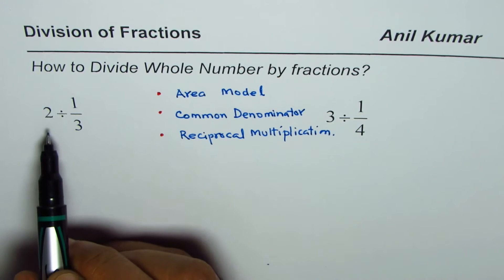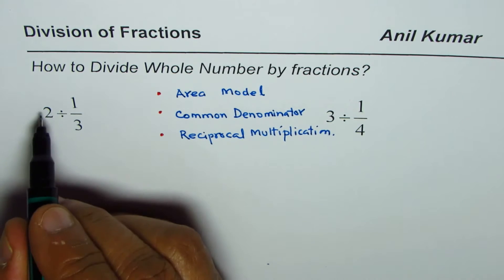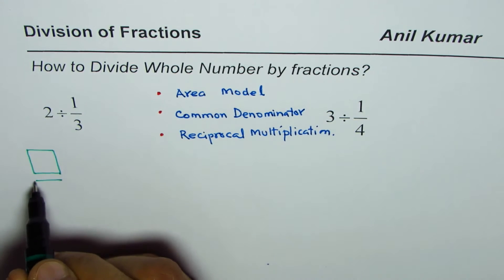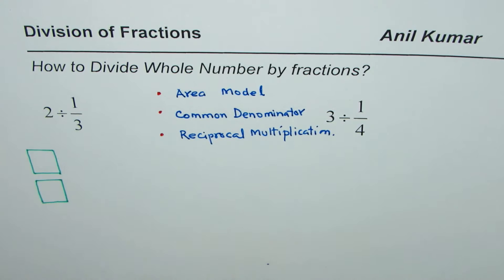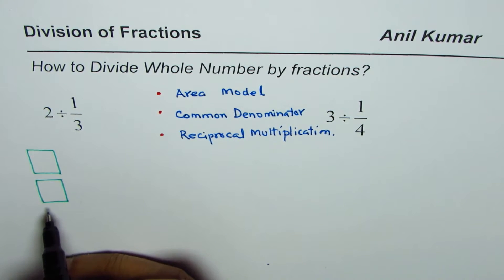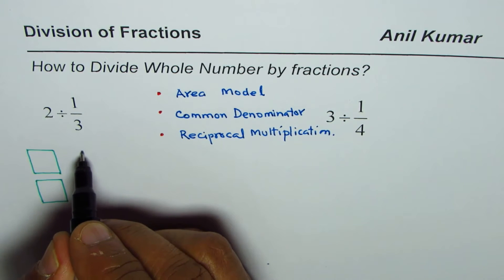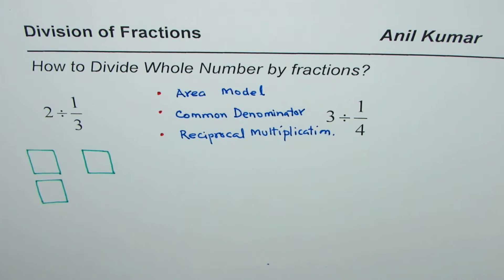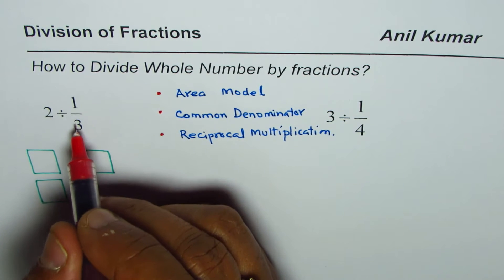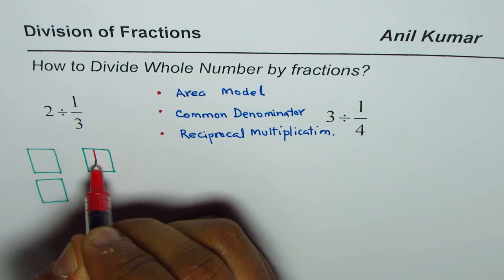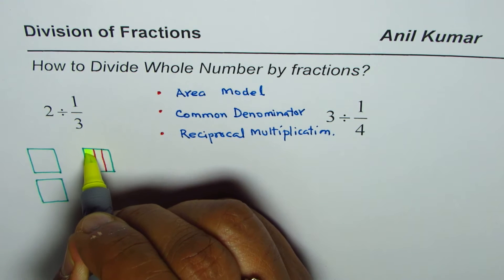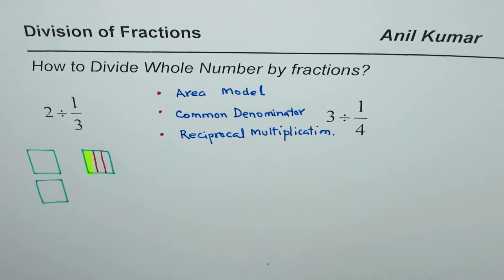Let's use the area model strategy to divide 2 by 1/3. Two means two wholes, so let me make two rectangles. I'm making small ones since we need space to show all three strategies. These two rectangles represent two, and for one-third I'll make a similar-sized rectangle. When we have one-third, we divide it into three equal parts and select one of them.